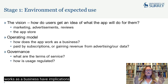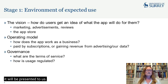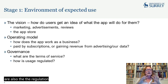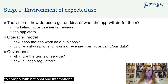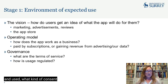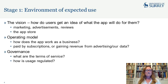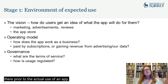Various aspects of the way that it works as a business have implications for the design of an app and for the way it will be presented to us. And then finally, sitting in the background are also the regulation and governance of an app — the terms and conditions that are presented to us in the small print, which have to comply with national and international regulations about how data is collected and used and what kind of consent is expected from users. So there is a lot sitting prior to actual use of an app.